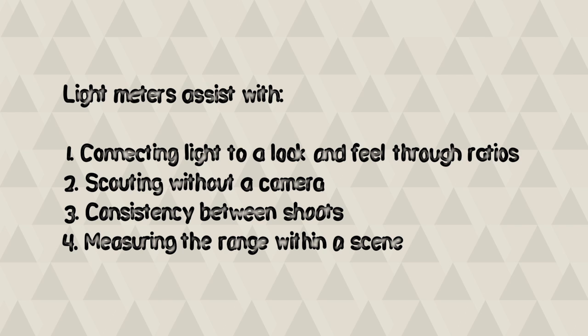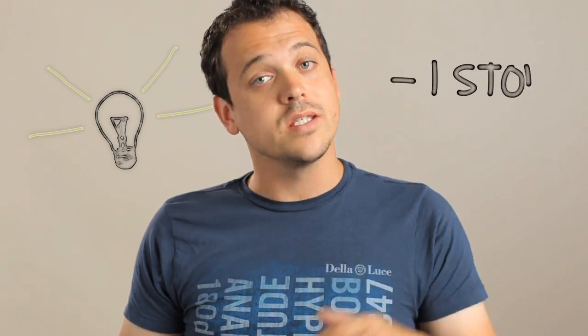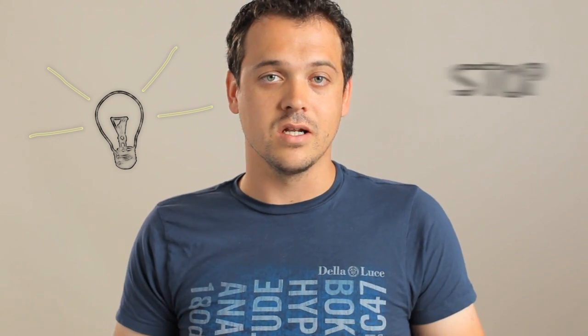Before we get into how a light meter actually works, we need to understand the units that a light meter is measuring, and that's going to be a stop of light. A stop of light is a unit used to quantify the amount of light or lighting ratios. When you increase the stop of light you are doubling the amount of light. If you take away a stop of light you are halving the light. We can look at stops of light in our aperture, our ISO, or our shutter speed.